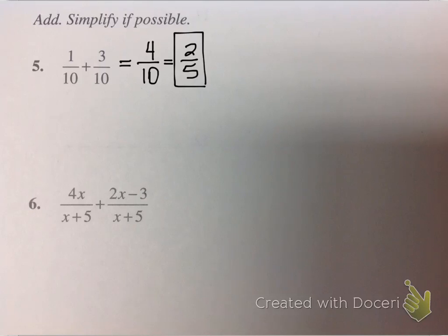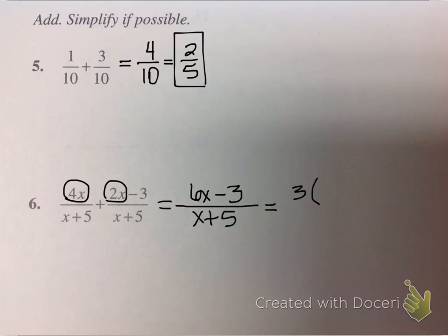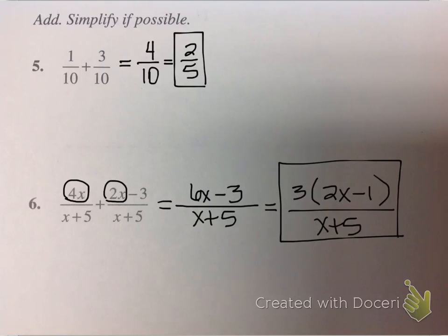Looking at the next example, we still have a common denominator, so we keep our denominator and add our numerators. Remember when you add, you can combine like terms. So we have 6x minus 3. To simplify rational expressions, factor and then remove factors equivalent to 1. Factoring the numerator, a 3 comes out, leaving 2x minus 1, over x plus 5. That doesn't cancel, so the final answer is 3 times (2x minus 1) over (x plus 5).